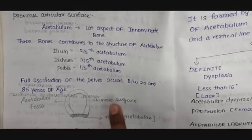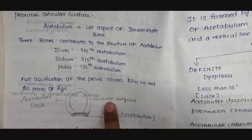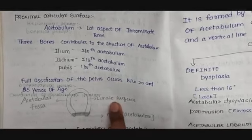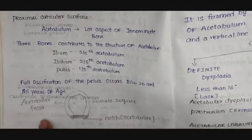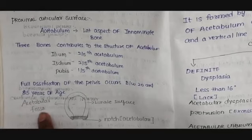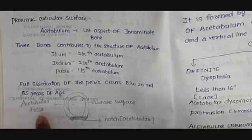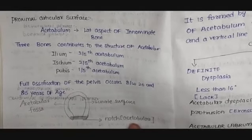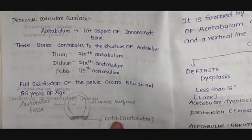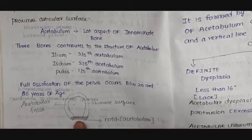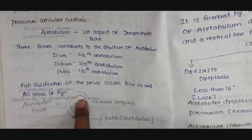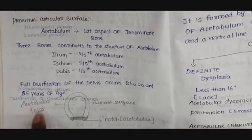The lunate surface is covered by hyaline articular cartilage, so only the lunate surface takes part in the articulation of the hip joint. The deeper most part, the acetabular fossa, does not take part in articulation — instead it provides negative intra-articular pressure. The acetabular notch is spanned by a ligament known as the transverse acetabular ligament, through which blood vessels pass into the center and deeper most part of the acetabulum, which is the acetabular fossa.